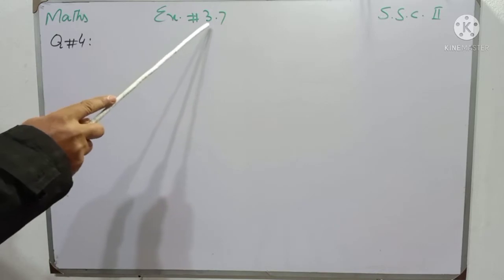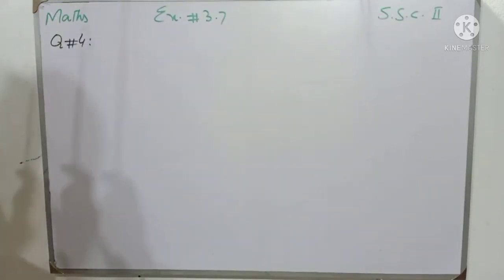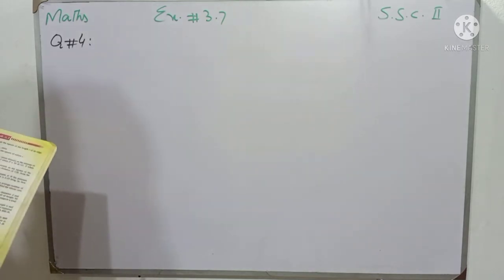Mathematics, Exercise 3.7, SSE 2, Question No. 4 is: The intensity L of light from a given source varies inversely as the square of the distance D.